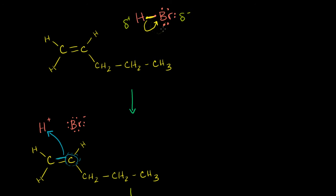After it's taken that electron, we drew one possible path where bromine now has eight valence electrons and a negative charge. Hydrogen now has a positive charge. In the next step, hydrogen took an electron from the right carbon — the carbon in the carbon-carbon double bond, breaking the pi bond. But it could have been possible for it to take an electron from the left carbon instead. Let's see what we would have ended up with if that happened.